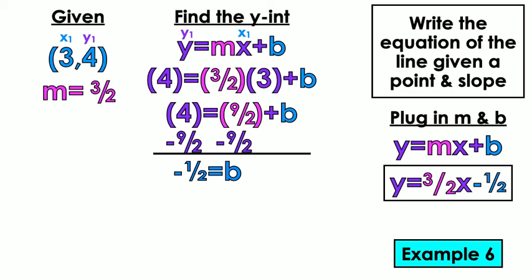You've got to do your fractions, you know? So you've got to do 4 over 1 minus 9 over 2. You have to get like denominators. And then when you get like denominators, then you could subtract. That's how you get negative 1 over 2 equals B.